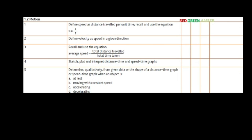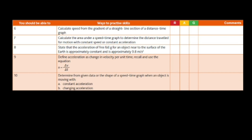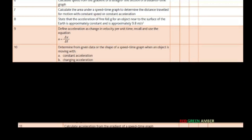Here's an example: the first one is from Motion — 'Define speed as distance travelled per unit time, recall and use the equation v = s/t.' It is very simple, but still if you are less confident, you can put a tick in amber, and after revision you can put a tick in green. In this way, these are portions from your Unit 1.